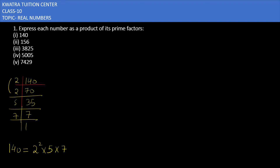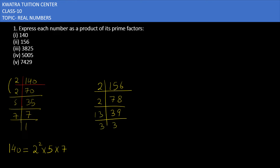Moving to 156, prime factorization again starts by dividing with 2 to get 78, then dividing by 2 again to get 39. Dividing 39 by 3 gives 13, so we write 3 first then 13. So 156 as a prime factor is 2 squared into 3 into 13.